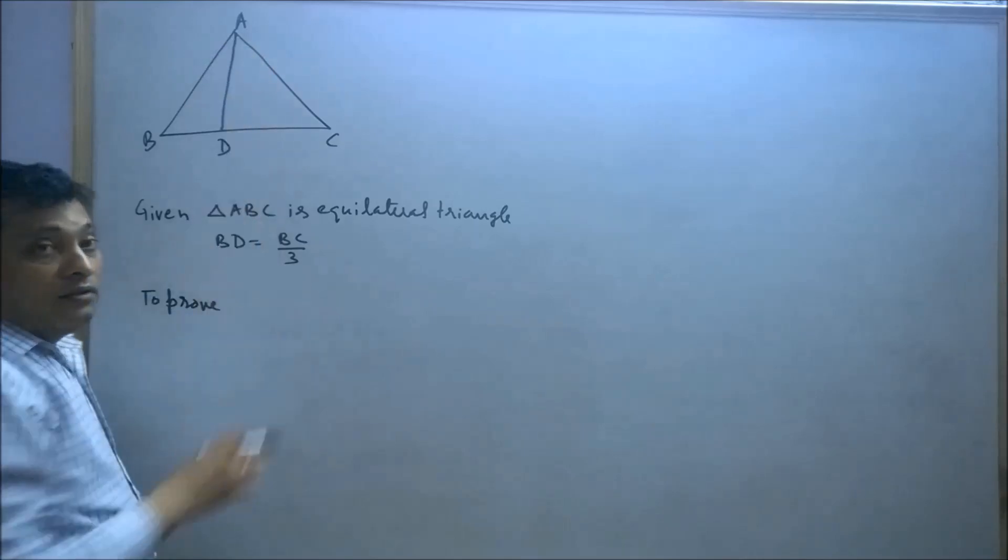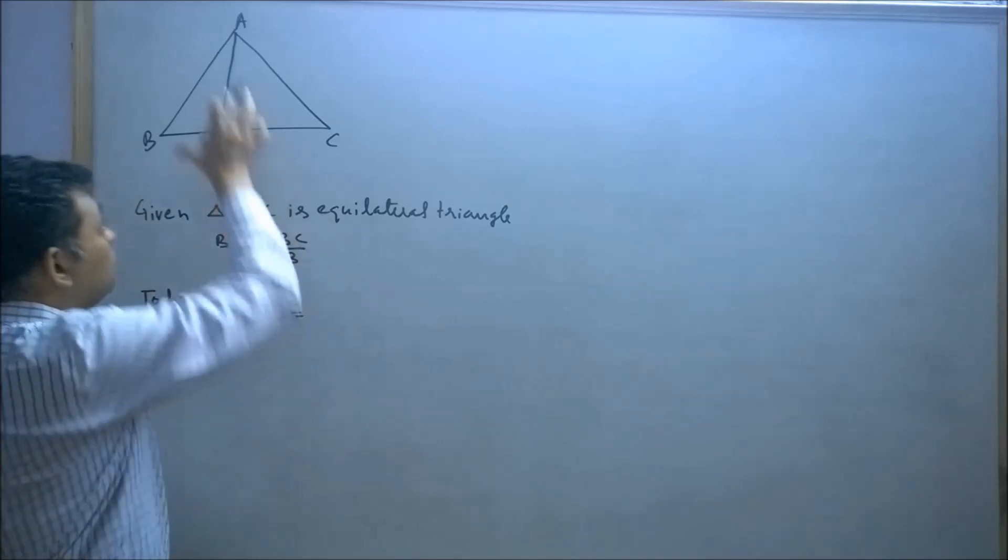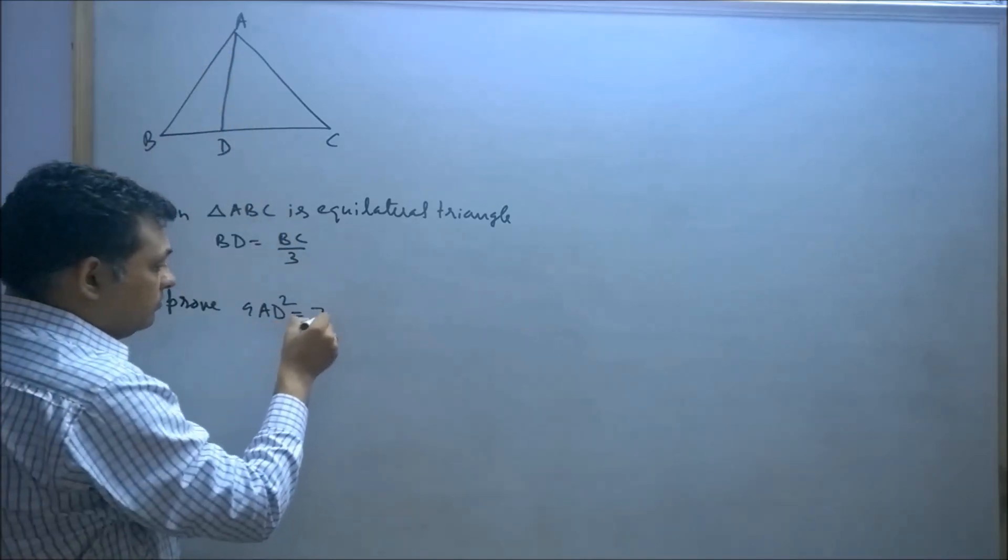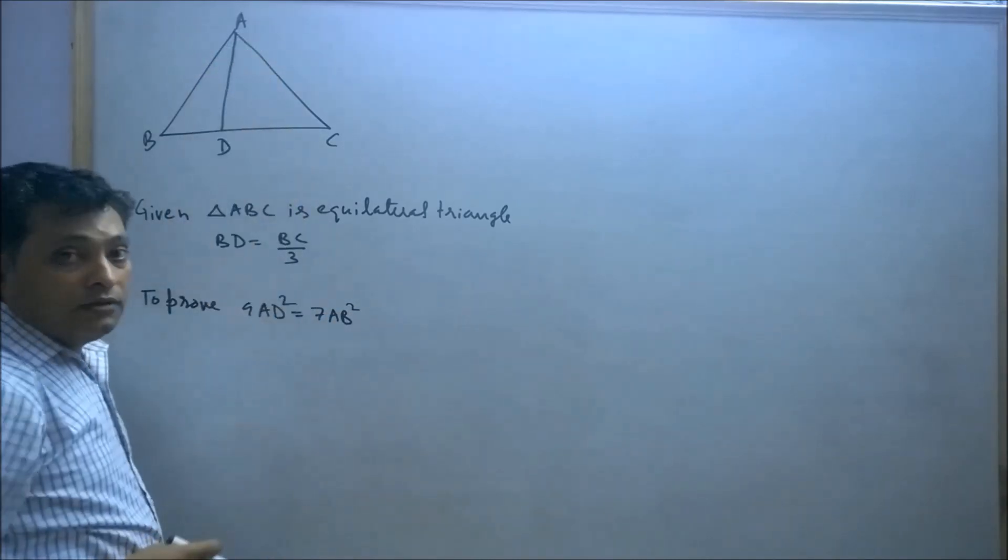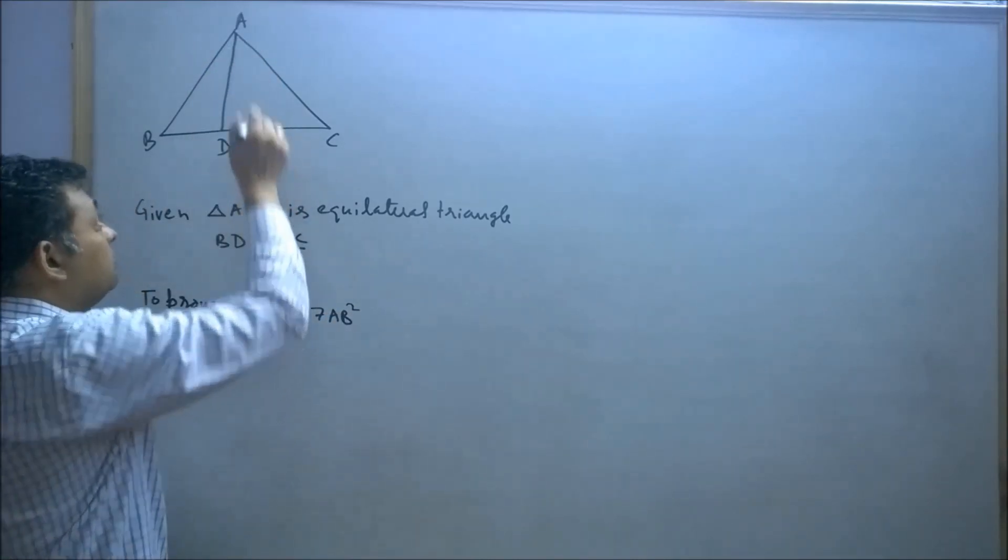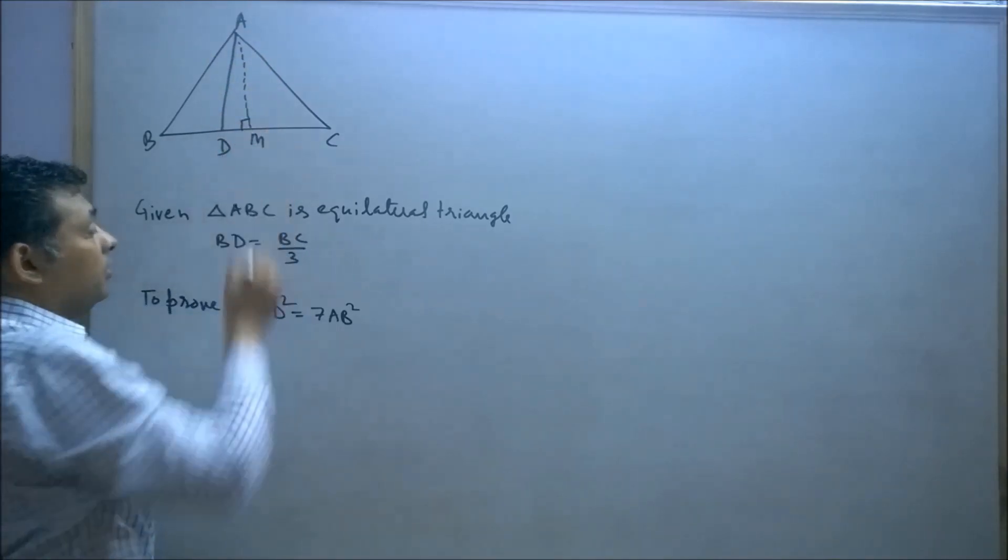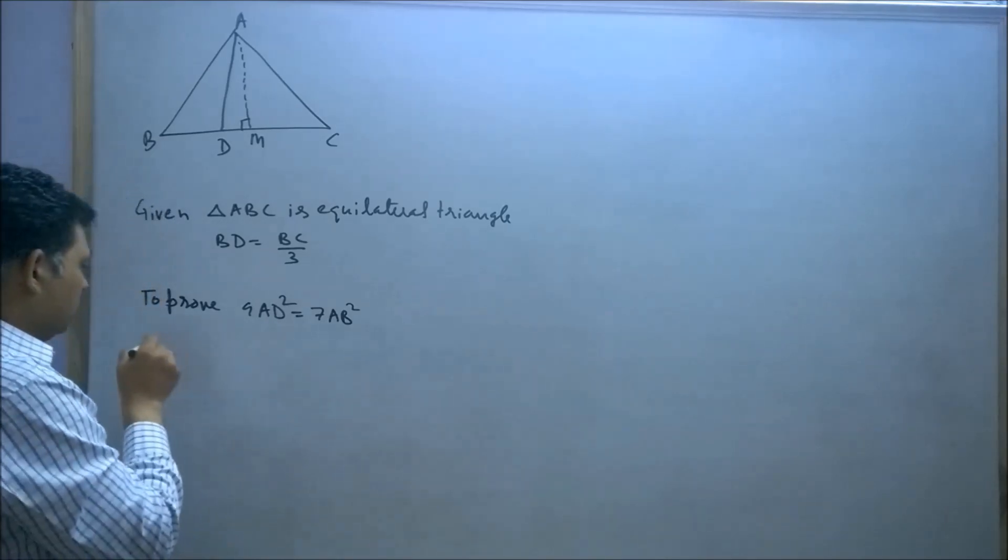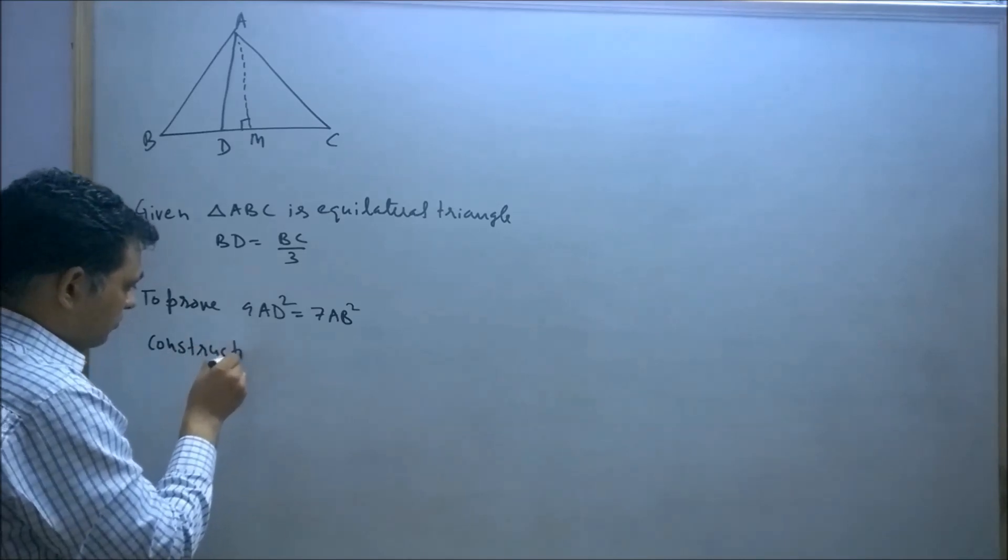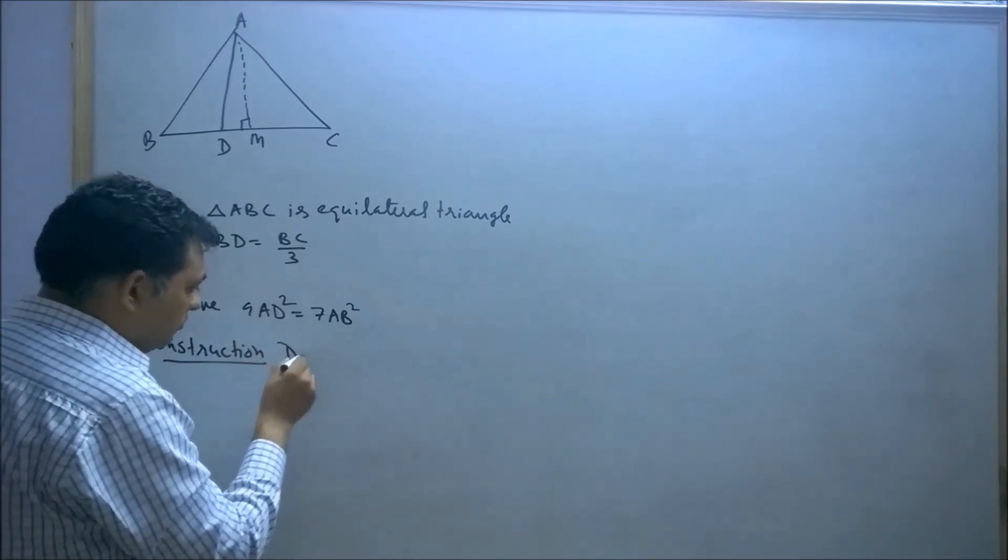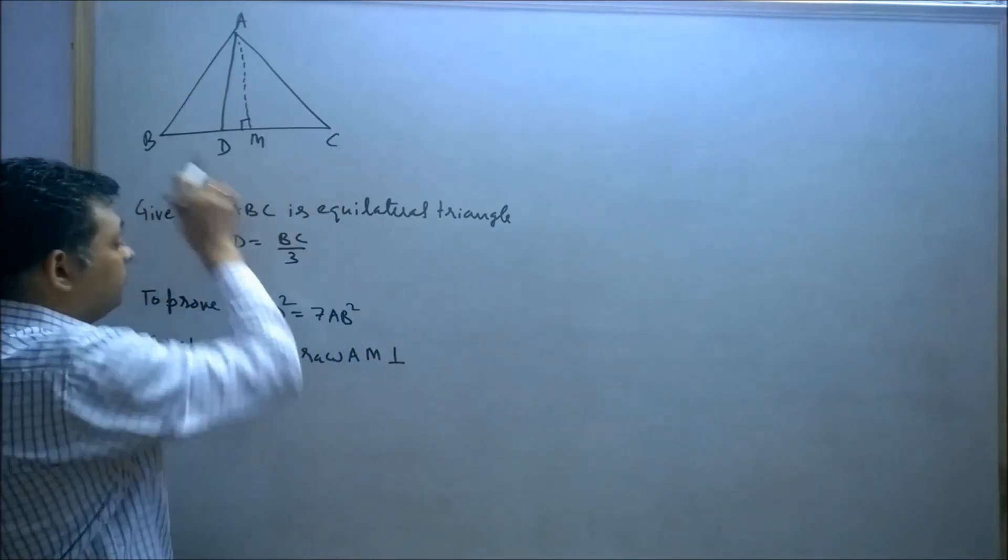To prove that 9AD² equals 7AC². Now try to construct an altitude on BC. Let AM be perpendicular on BC, so draw AM perpendicular on BC.